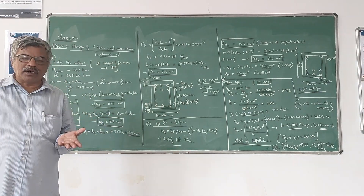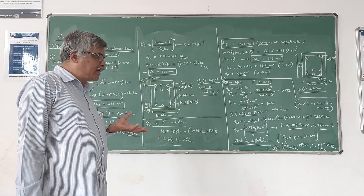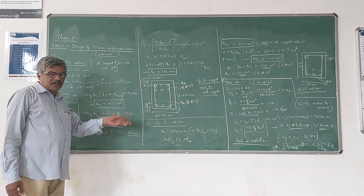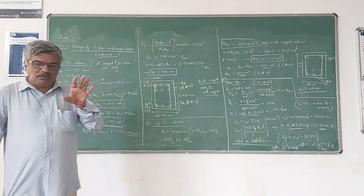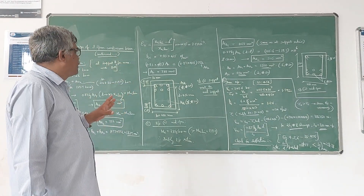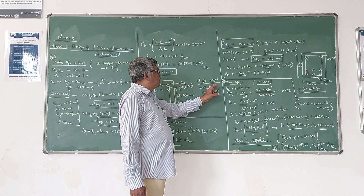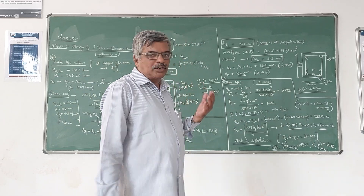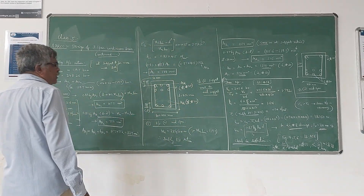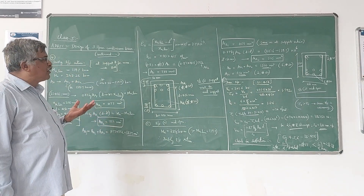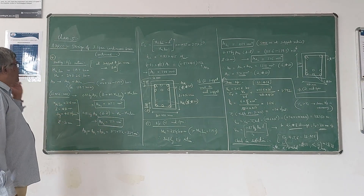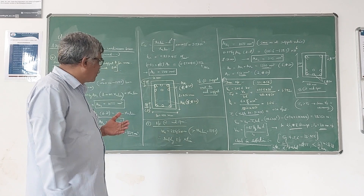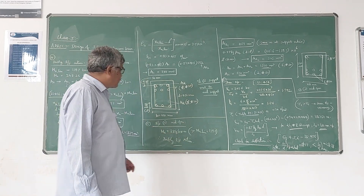This design is similar to what we have done in the RCC course. For the design of doubly reinforced section, there are two sections we have to design: one for the maximum negative bending moment at the cross section of the support next to the end support, and the other for the maximum positive bending moment. The maximum negative bending moment is 248.26 kNm and the maximum positive bending moment is 215.6 kNm.